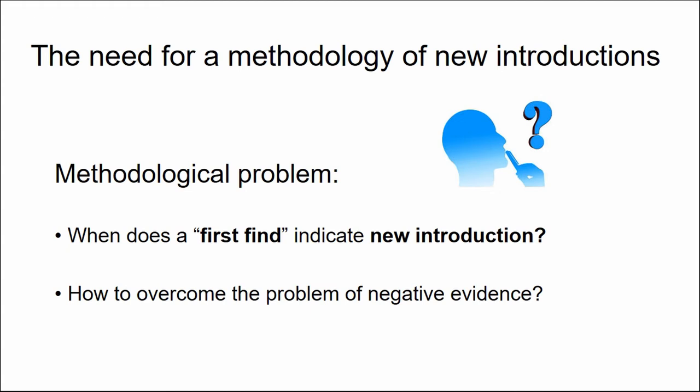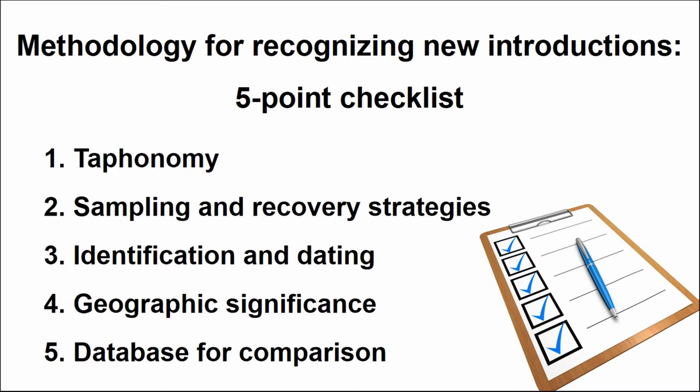To overcome that problem I came up with five criteria — some of them will be familiar from archeobotanical practice, but as far as I know they've never been laid out in a systematic methodology. This is my contribution to critically evaluating the Islamic Green Revolution. Each point is a necessary criterion, so a problem in any one of these would undermine the interpretation of the first find as a new introduction.